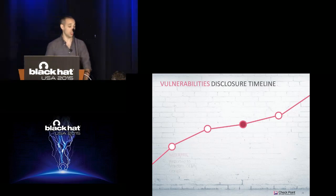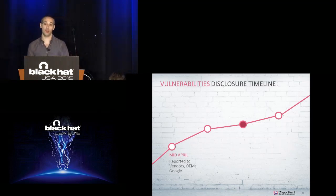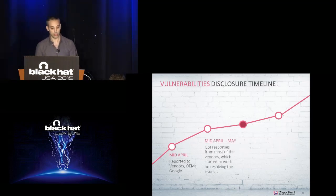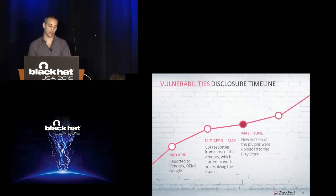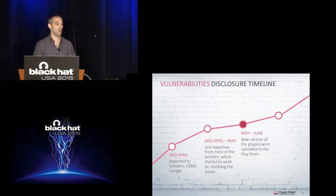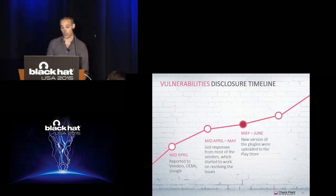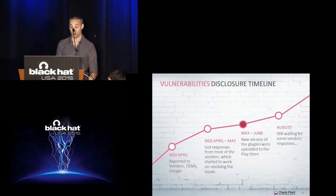In terms of vulnerability disclosure timeline: we reported to Google, the OEMs, and the vendors about these vulnerabilities in mid-April. We got responses from most of them. Since May, some vendors have already started publishing new versions, and we know that some OEMs, like Samsung, are already working on fixes. But as of August, we are still waiting for some vendor responses.